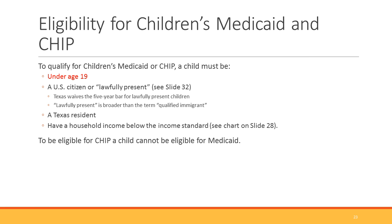You also need to be a Texas resident — meaning you live in Texas, and you may need to verify it with a utility bill or similar. You need a household income below the income standard, which we'll go over on slide 28. One important note: you can't be eligible for CHIP if you're eligible for Medicaid. You don't get to opt in and say you want CHIP instead of Medicaid. Sometimes clients are more familiar with CHIP and think that's what they want, but it's one or the other depending on your income level.